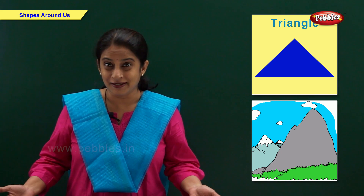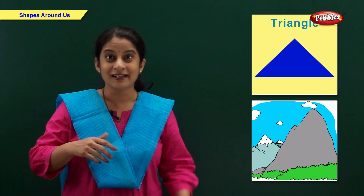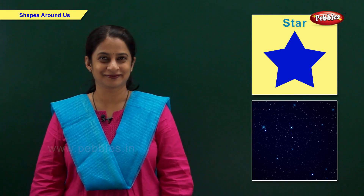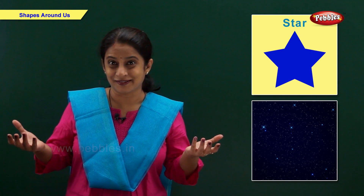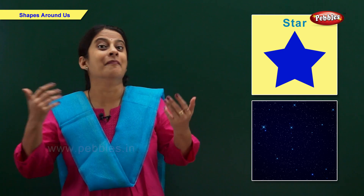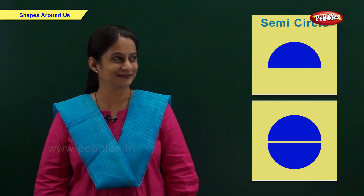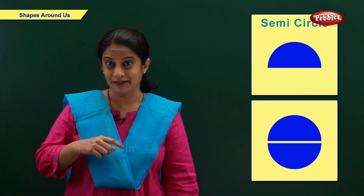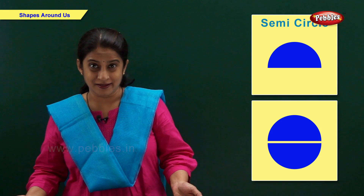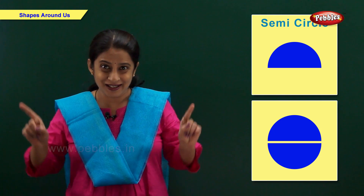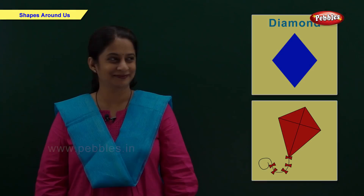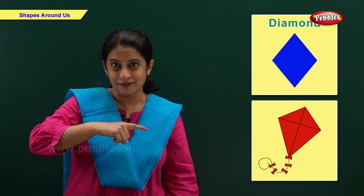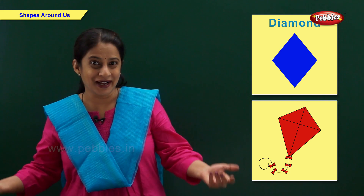Triangle — the shape of this mountain is like a triangle. Star — there are many stars in the sky. Semicircle — two semicircles make a circle. Diamond — the shape of this kite is like a diamond.